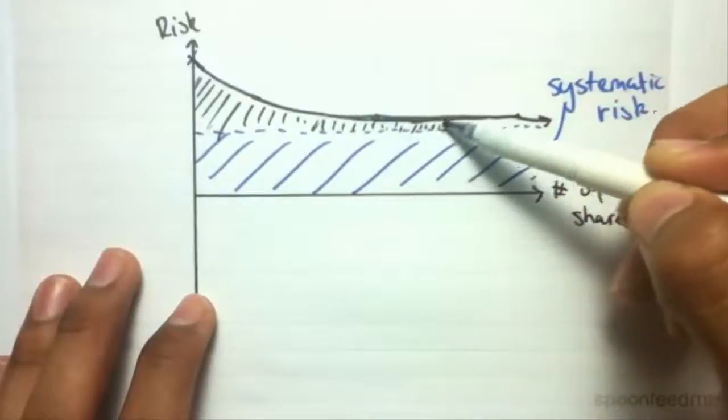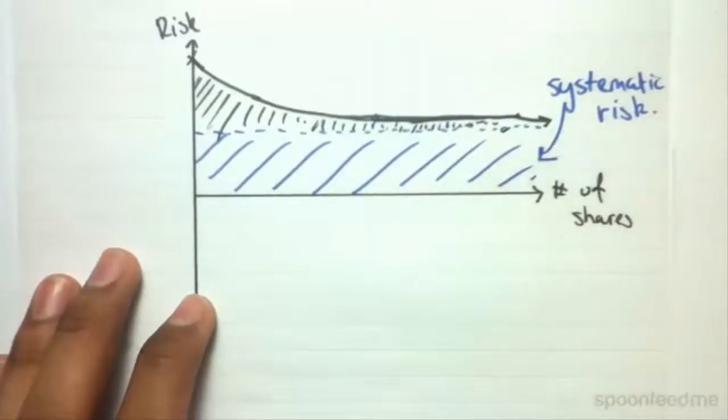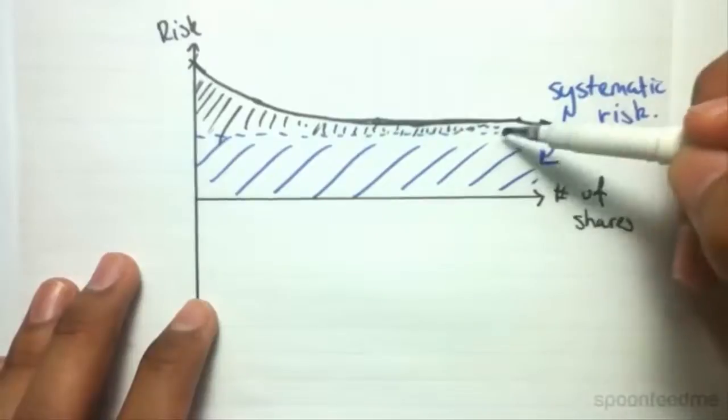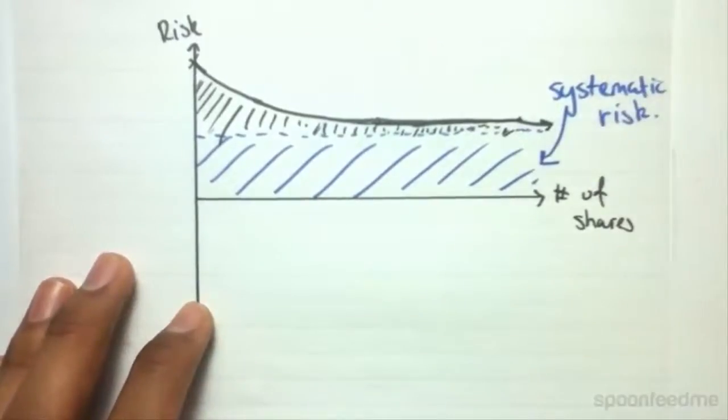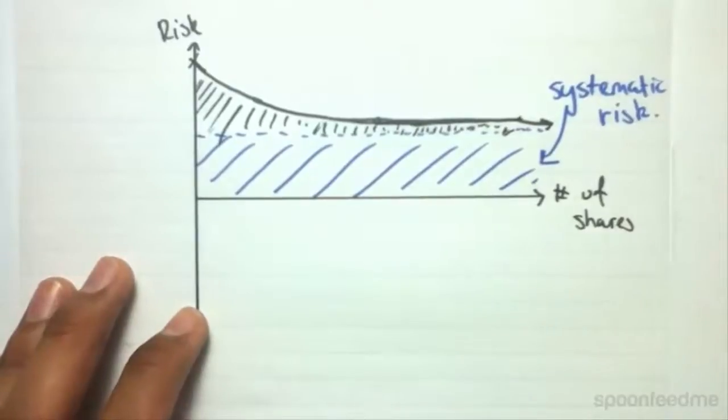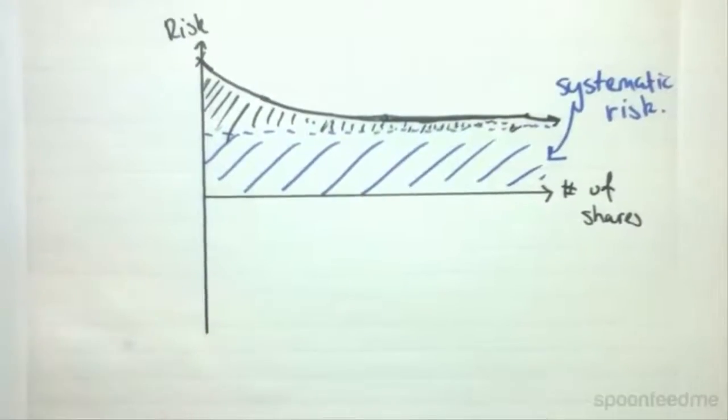Our unsystematic risk will decrease so that it converges to a point where it's unidentifiable, and all we're left with is systematic risk.